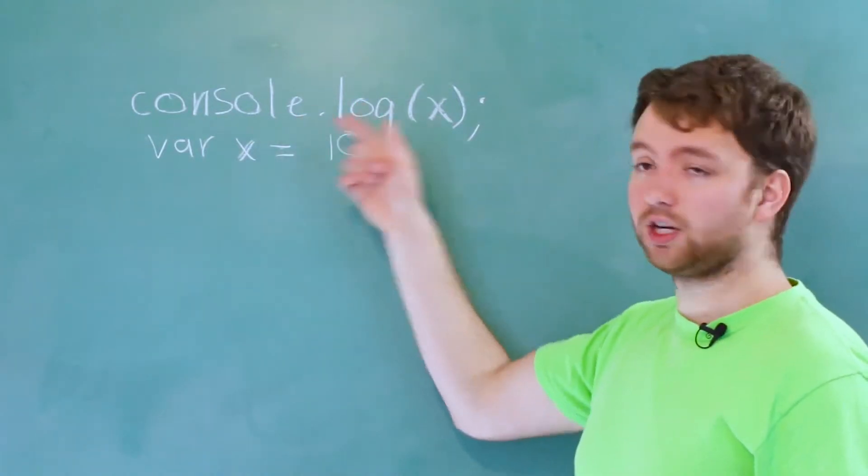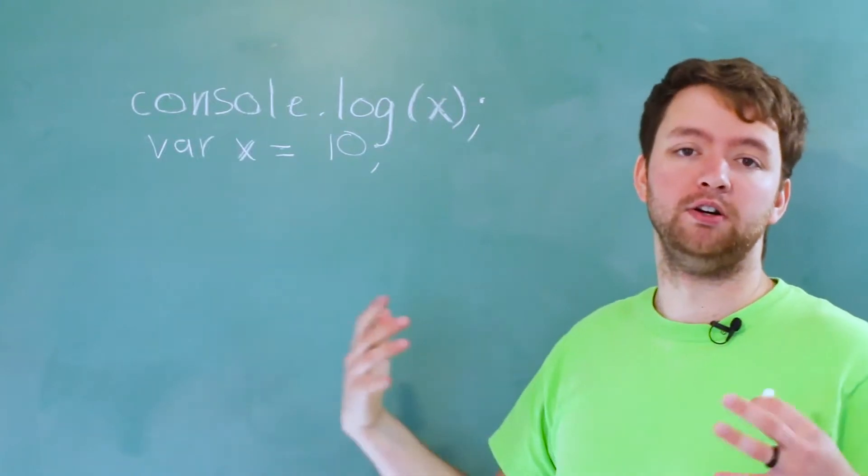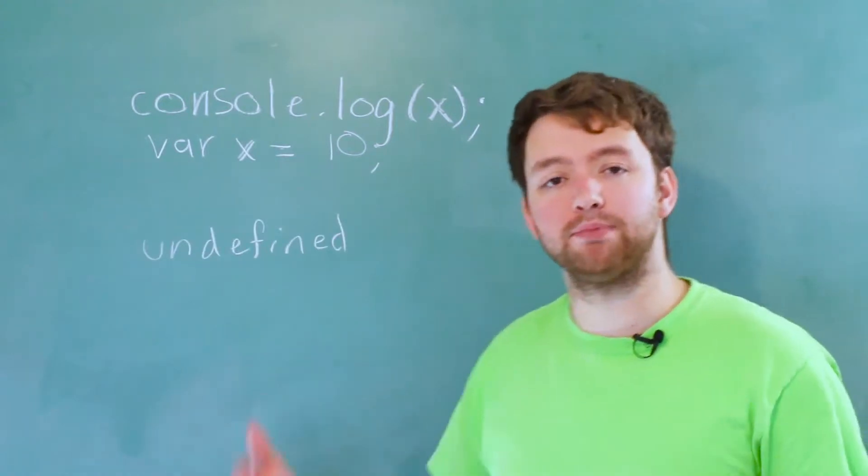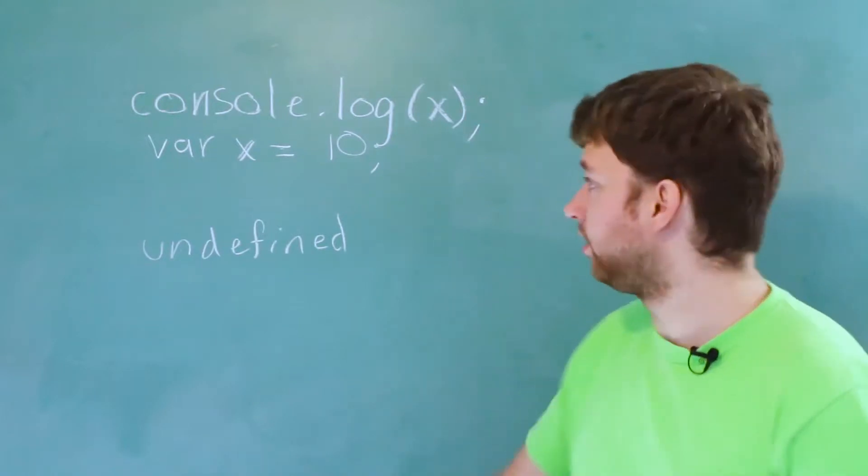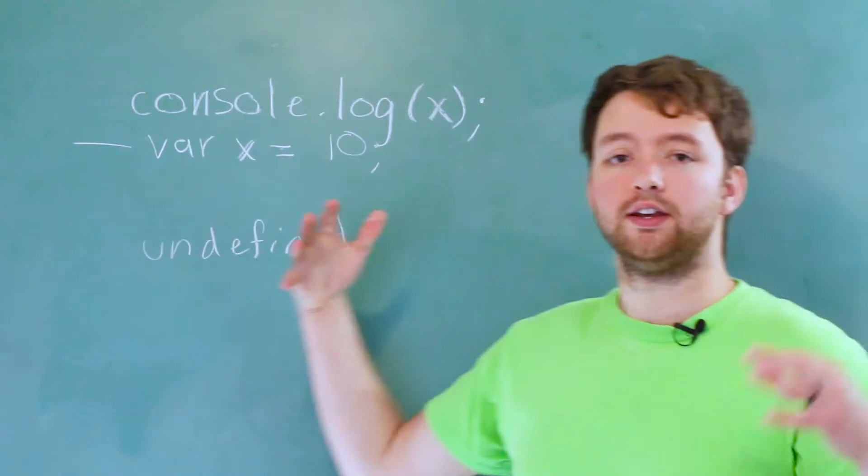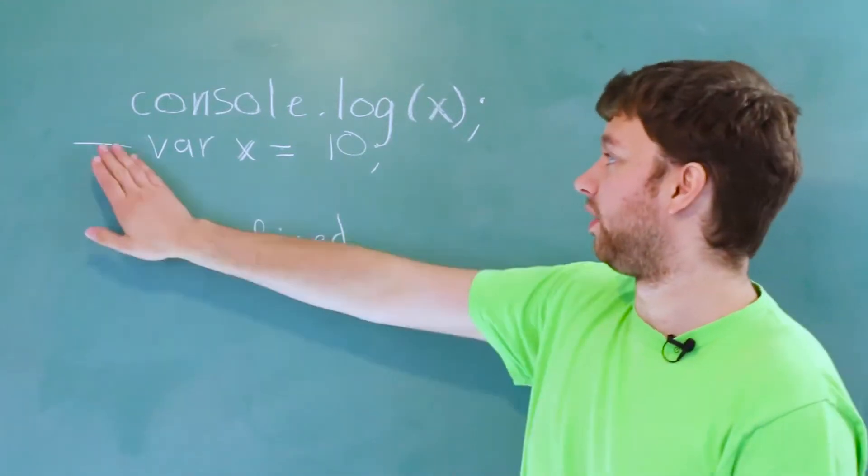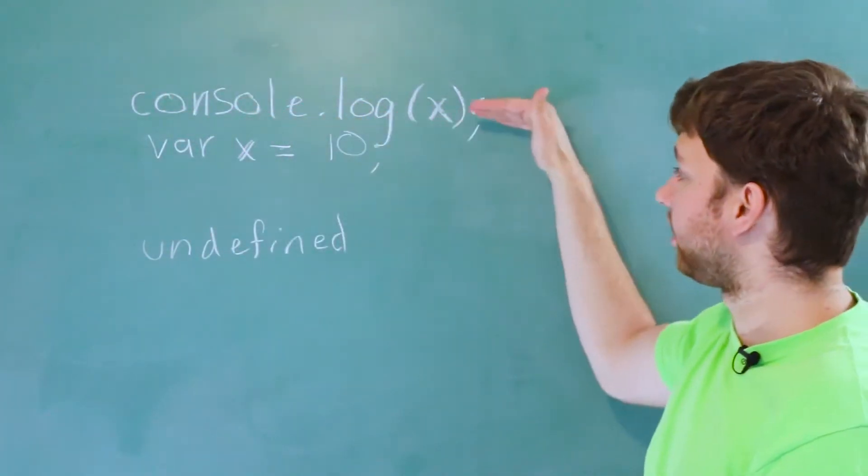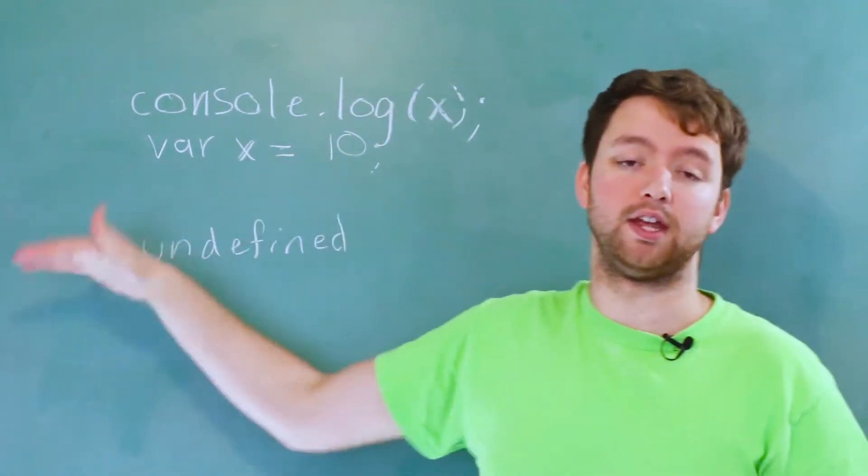So in this situation we are console logging x before a value is given to x. So what is going to be outputted in the console? Well it's actually going to output undefined. So basically what's happening is the first scan of our code, any variable declarations happen. So it goes through here and notices one right here: x. X is then given the value undefined. Now the second time through our code where our code is actually executed, it goes through, hits this console log, console logs the value x which as we know is undefined. Then it goes down here and assigns the value 10 to x.